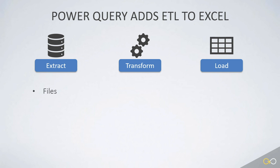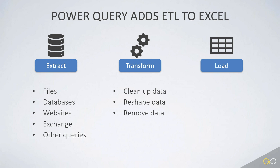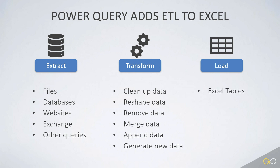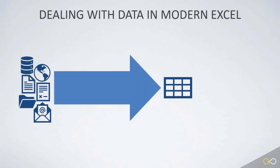Where can we get our data from? Files, databases, the web, a Microsoft Exchange email server, or even other queries — and that's far from an exhaustive list. What does Transform mean? It means cleaning data, reshaping it, removing irrelevant data, merging things horizontally like VLOOKUP, appending tables by stacking them into long tables, and even generating new data. Where can we load it? To Excel tables by default, directly into Power Pivot's data model, or as a connection query that's preloaded and ready to be called when needed.